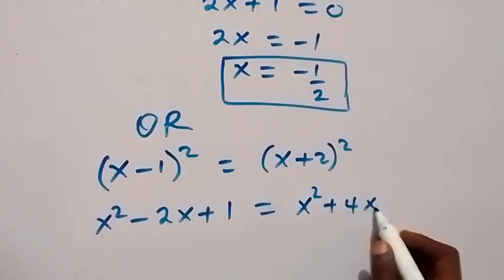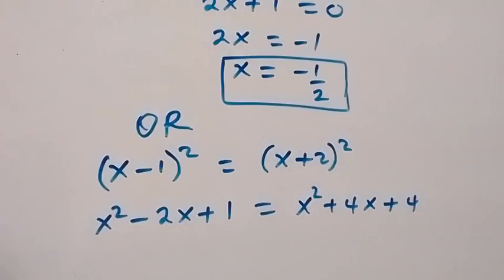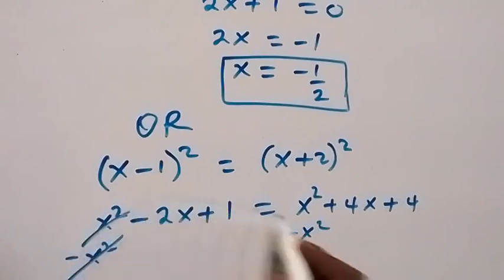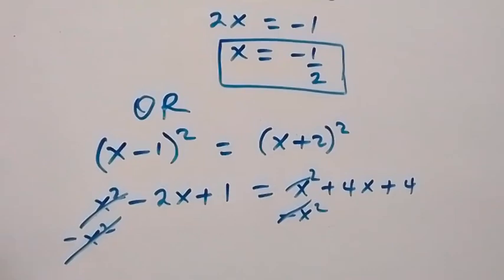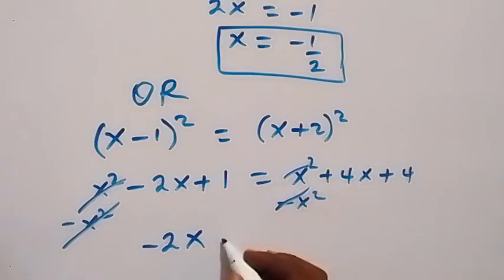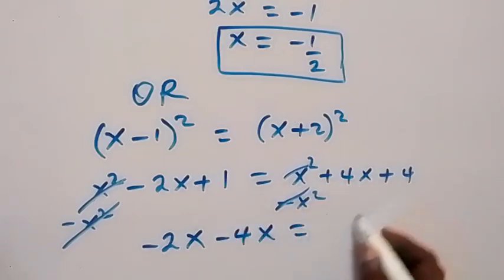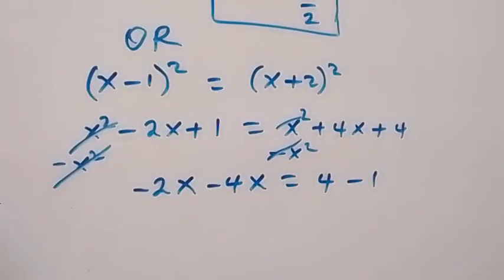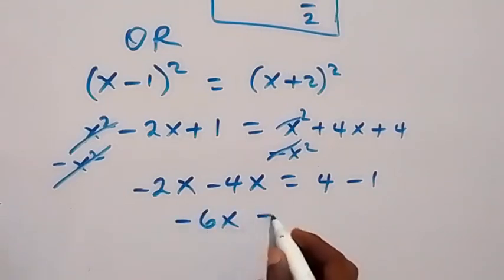That's the expansion. What we have here: when we subtract x² from both sides, x² cancels out. Then we can collect like terms from there. So we take x to one side: we have minus 2x left. Then take 4x here, it becomes minus 4x. Equals - we have 4 left here, take 1 there, becomes minus 1. Here what we have is minus 6x, which equals 3.